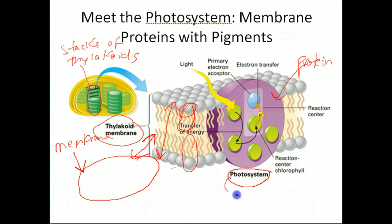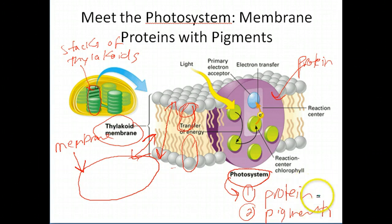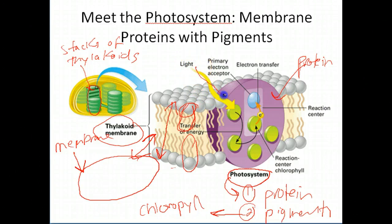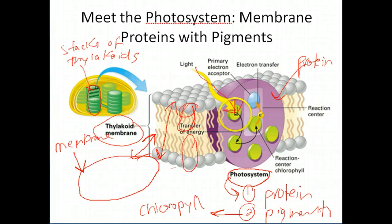A photosystem is made of two parts: protein — the purple part — and pigments, like chlorophyll. So what happens in this photosystem, this protein embedded in the membrane? Light comes in and it strikes the green part right here — the pigment, which is chlorophyll. What happens in chlorophyll is it gets really excited. Not excited like you are in biology class, but excited in that the electrons go from a ground level, low energy, to a high energy.